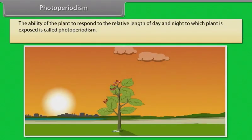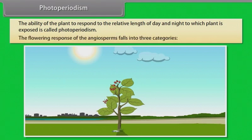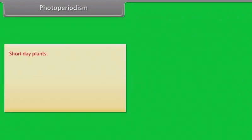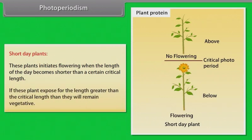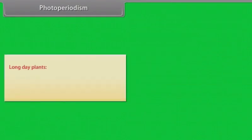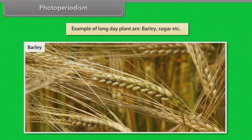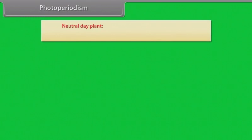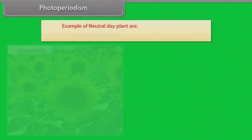Photoperiodism: The ability of plants to respond to the relative length of day and night to which the plant is exposed is called photoperiodism. The flowering response of the angiosperms falls into three categories. Short day plants: These plants initiate flowering when the length of the day becomes shorter than a certain critical length; if exposed to a length greater than the critical length, they will remain vegetative. Examples: Cosmos, Dahlia, etc. Long day plants: These plants induce flowering when day length exceeds critical day length. Examples: Barley, sugar, etc. Neutral day plants: These plants flower regardless of the exposure to light. Examples: Sunflower, tomato, etc.